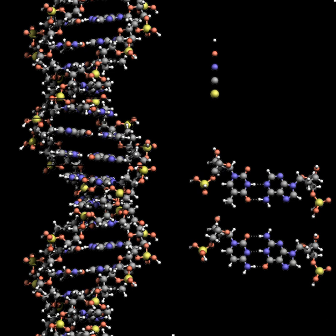DNA usually occurs as linear chromosomes in eukaryotes and circular chromosomes in prokaryotes. The set of chromosomes in a cell makes up its genome. The human genome has approximately 3 billion base pairs of DNA arranged into 46 chromosomes. The information carried by DNA is held in the sequence of pieces of DNA called genes. Transmission of genetic information in genes is achieved via complementary base pairing. For example, in transcription, when a cell uses the information in a gene, the DNA sequence is copied into a complementary RNA sequence through the attraction between the DNA and the correct RNA nucleotides.